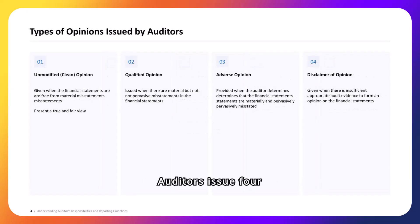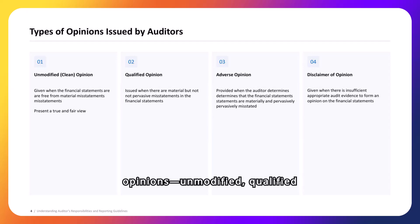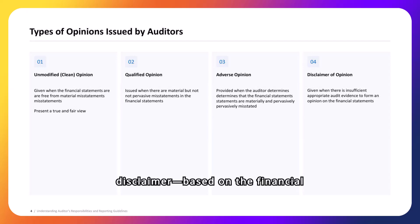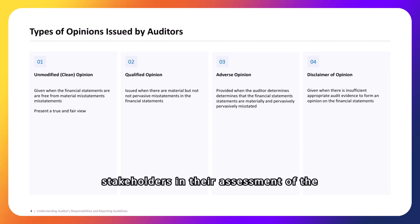Auditors issue four types of opinions — unmodified, qualified, adverse, and disclaimer — based on the financial statement's accuracy, guiding stakeholders in their assessment of the company's financial health.